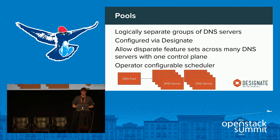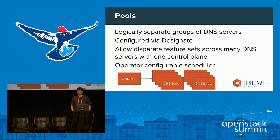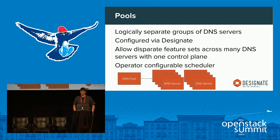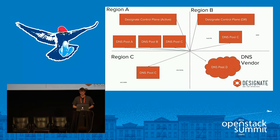Designate makes this easy to configure. You can have as many or as few pools as you want. Scheduling zones across pools is straightforward — there's an operator-configurable scheduler that lets you write your own filters. A pool is usually made up of some number of DNS servers — 2, 4, 6, or more — with their own NS records. When you create a zone in a pool you get the NS records back for just that pool.